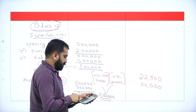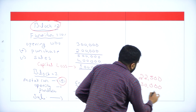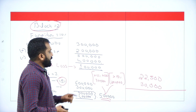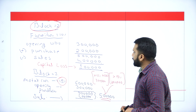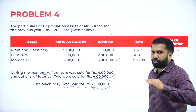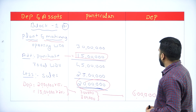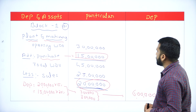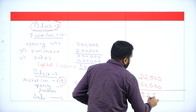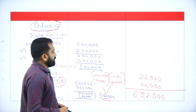Calculating: 2 lakh into 15 percent equals 30,000. So the depreciation figures are: Block 1 plant and machinery 6 lakh, Block 2 furniture capital loss, Block 3 motor car — 3 lakh into 15% into 50% plus 2 lakh into 15% = 22,500 plus 30,000 = 52,500. Total depreciation is 6 lakh 52,500.